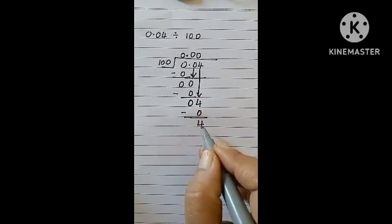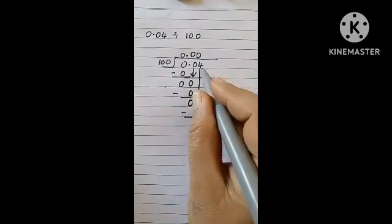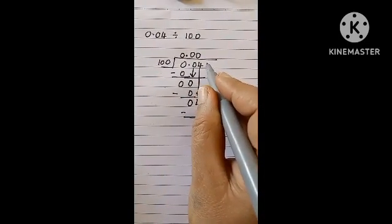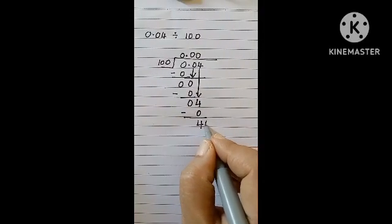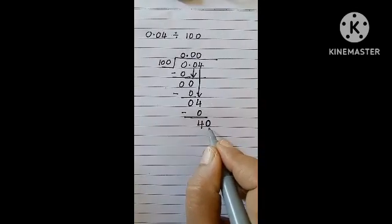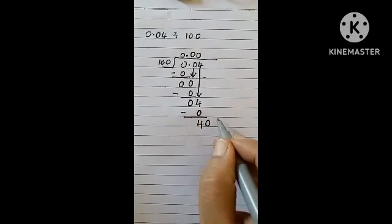So, how many times does this 4 go by 100? 0 times. But do you have any other number from the dividend to take along with this remainder? No. So, you will take your own 0. So, you have now 40. Does 40 go by 100? No.